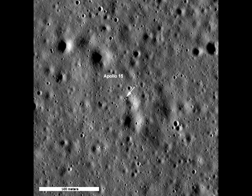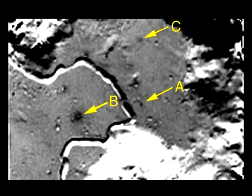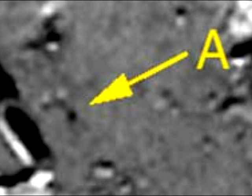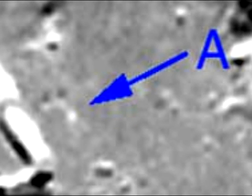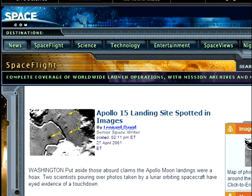Let's see if we can find it. First of all, it is important to note that the Clementine photographs were recorded in the ultraviolet spectrum. This is why the splotch comes out black. If these images were photographed in the visible light spectrum, the anomaly would have come out much brighter.